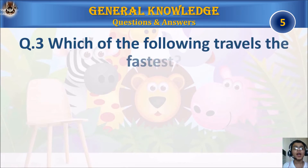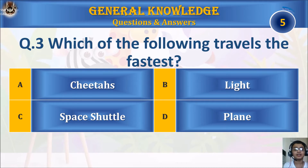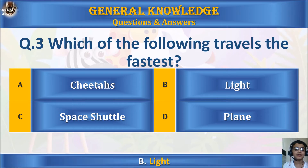Question 3: Which of the following travels the fastest? A: cheetahs. B: light. C: space shuttle. Or D: plane. Your time starts. The answer is B: light.